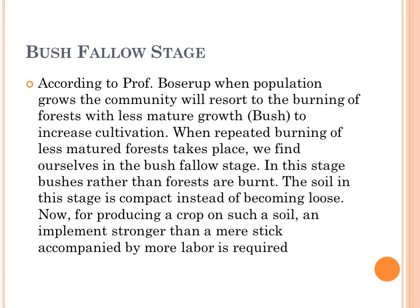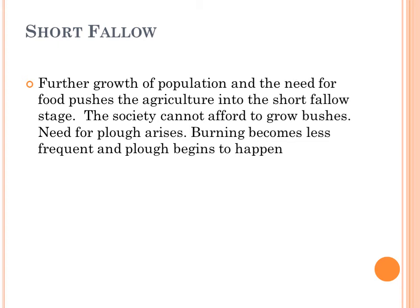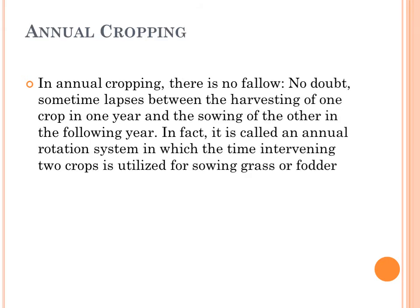In the short fallow stage, with further population growth the need for food increases even more, and society cannot afford to let even bushes grow. Immediately after cultivation, they plow the area again. The land is left fallow for a very short period of time — neither plants nor bushes are allowed to grow — because the need for food increases as population increases, creating much pressure to cultivate the land again and again.